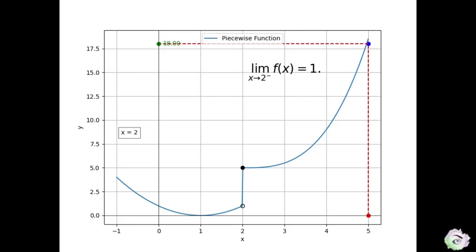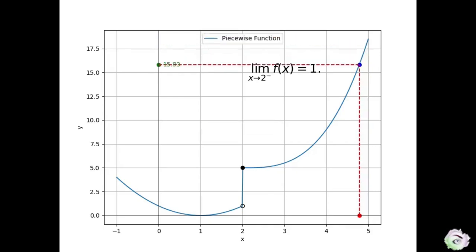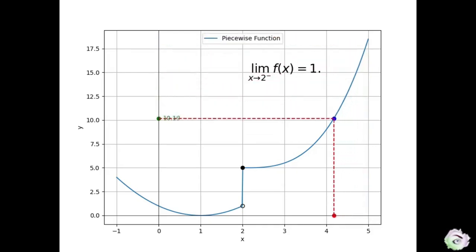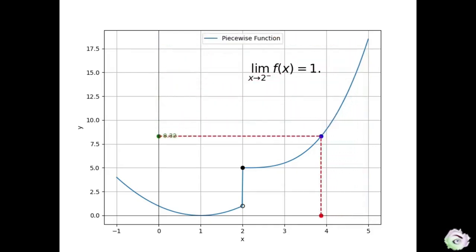The red dot shows the input x coordinate, and the green dot shows the corresponding y coordinate. Let's observe the movement of the y coordinate as x moves towards 2 from the right. We can see that as x moves towards 2 from the right, y moves towards 5.